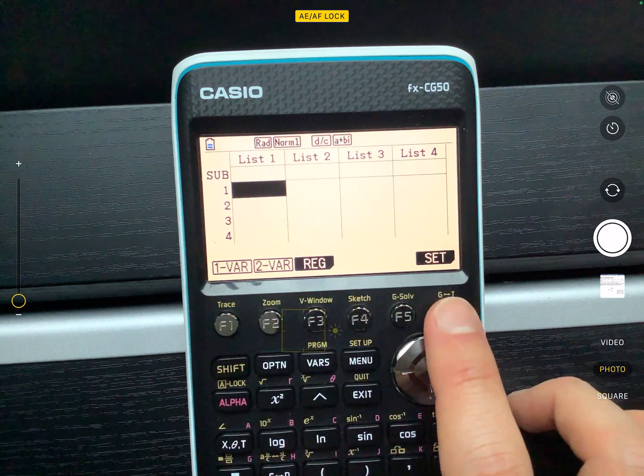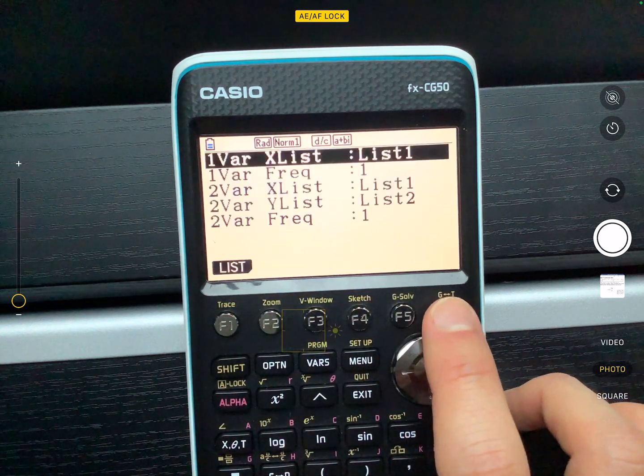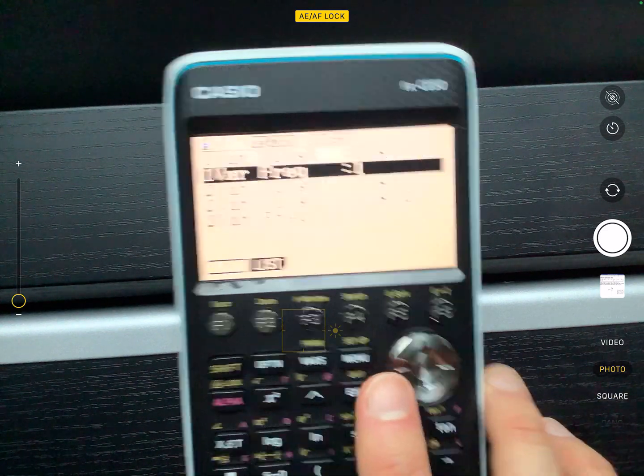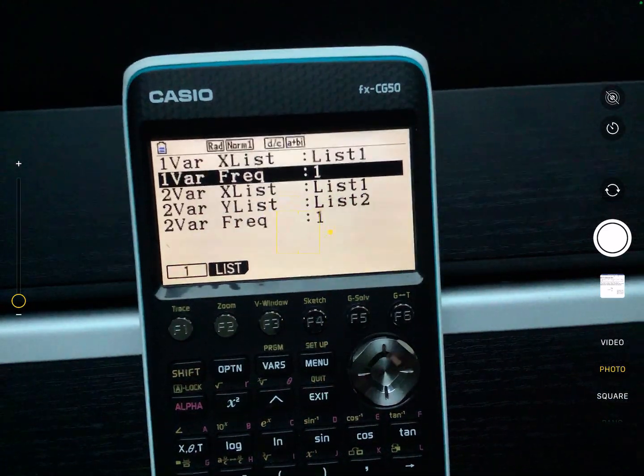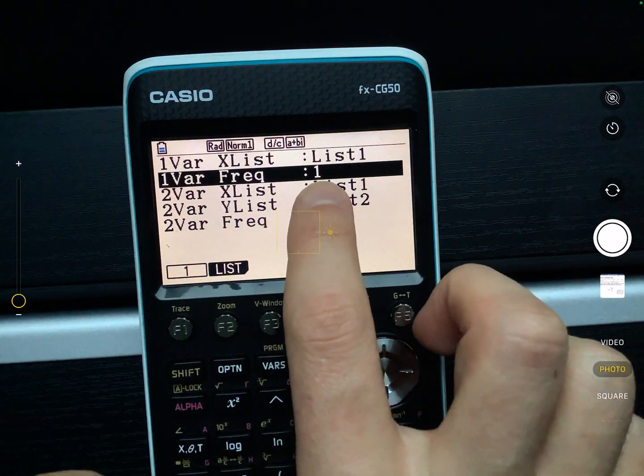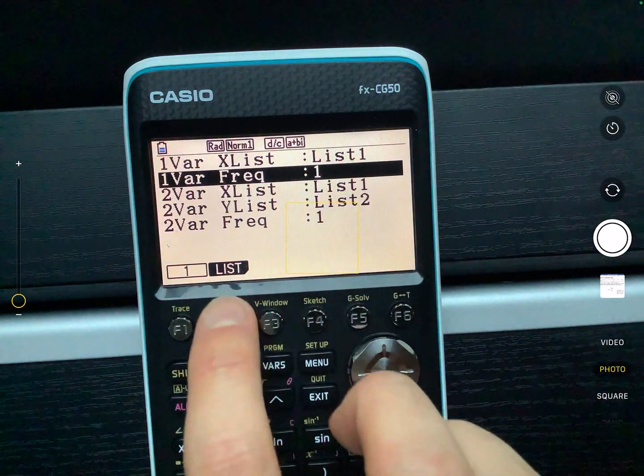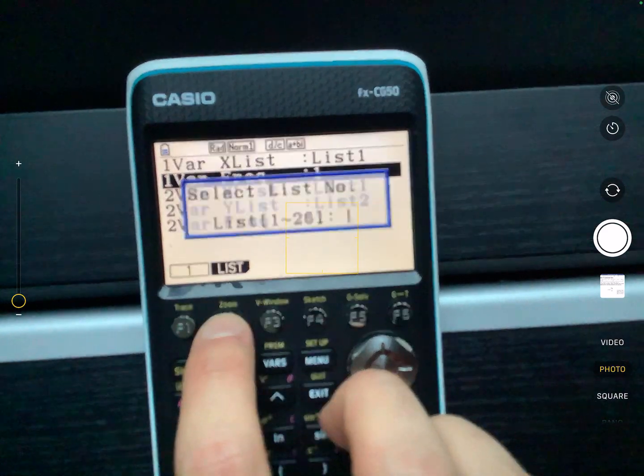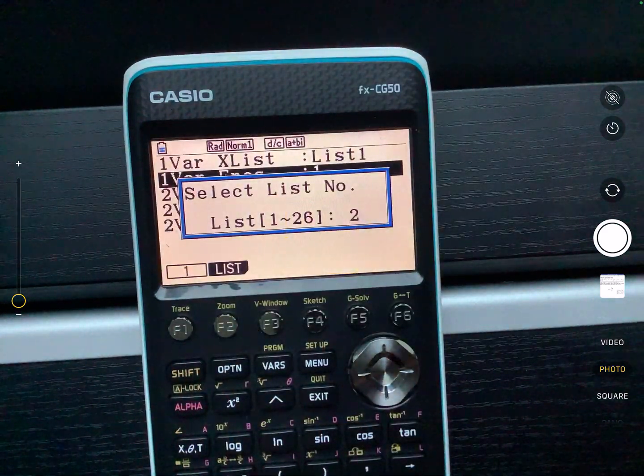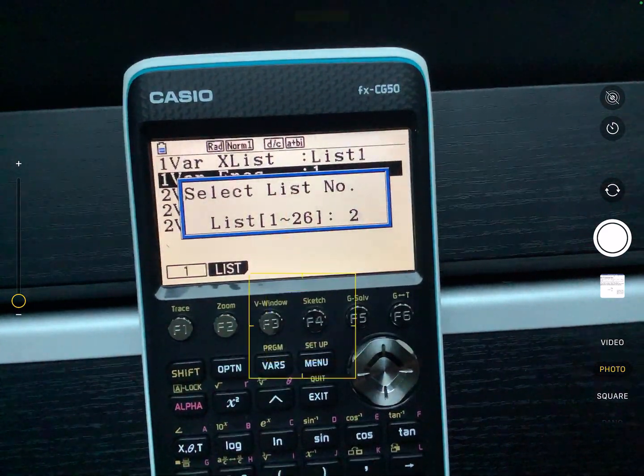And this time, what you can do is you go back to calculate, and it's one variable calculation. But before you do that, I want you to press the set button. Now what you can do is you can change it so that the frequency doesn't have to be one for every single one of them. Instead, you can change it to a list. So I'm going to change it from list one, and I'm going to change it to list two instead.